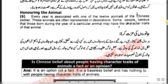Now we will read the sixth paragraph: honoring the animal - جانوروں کی عزت کرنا. Every year is associated with one of twelve animals of the Chinese zodiac - ہر سال چینی کیلنڈر میں دیے گئے بروج کے بارہ جانوروں میں سے کسی ایک سے تعلق رکھتا ہے۔ These animals are often represented in the form of paintings. Some people believe that those born during the year of a particular animal may have the character traits of that animal.